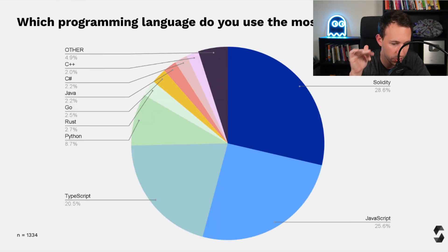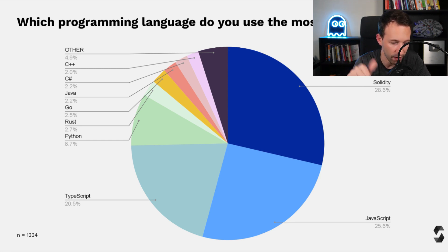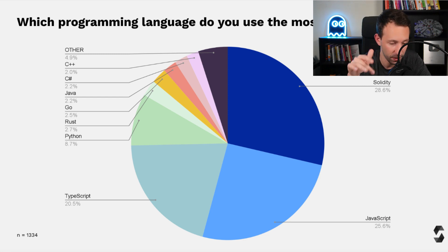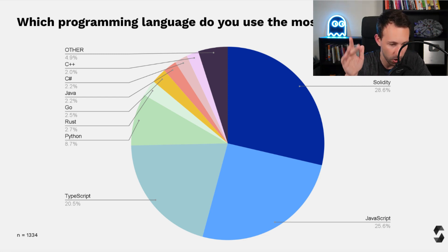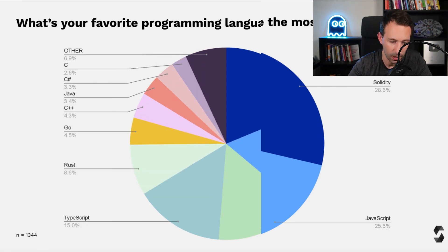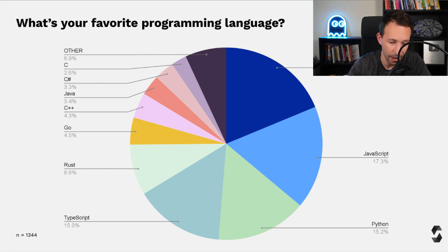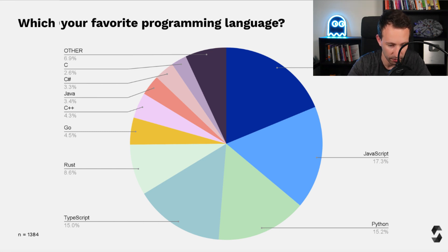Which programming language do you use the most? Solidity comes on top, and then almost half of people use either JavaScript or TypeScript, which makes sense because the JavaScript stack is really dominant in Web3. About a quarter use other languages including backend languages like Rust and Go. When asked about their favorite programming language, it's more balanced — it's almost the same between TypeScript, JavaScript, Python, with Rust also quite popular.